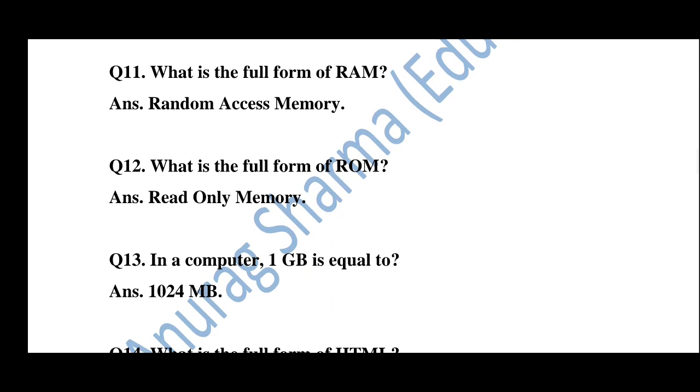Question 11: What is the full form of RAM? Answer: Random Access Memory. Question 12: What is the full form of ROM? Answer: Read Only Memory. Question 13: In a computer, 1 GB is equal to? Answer: 1024 MB. GB full form is Gigabyte, MB full form is Megabyte.